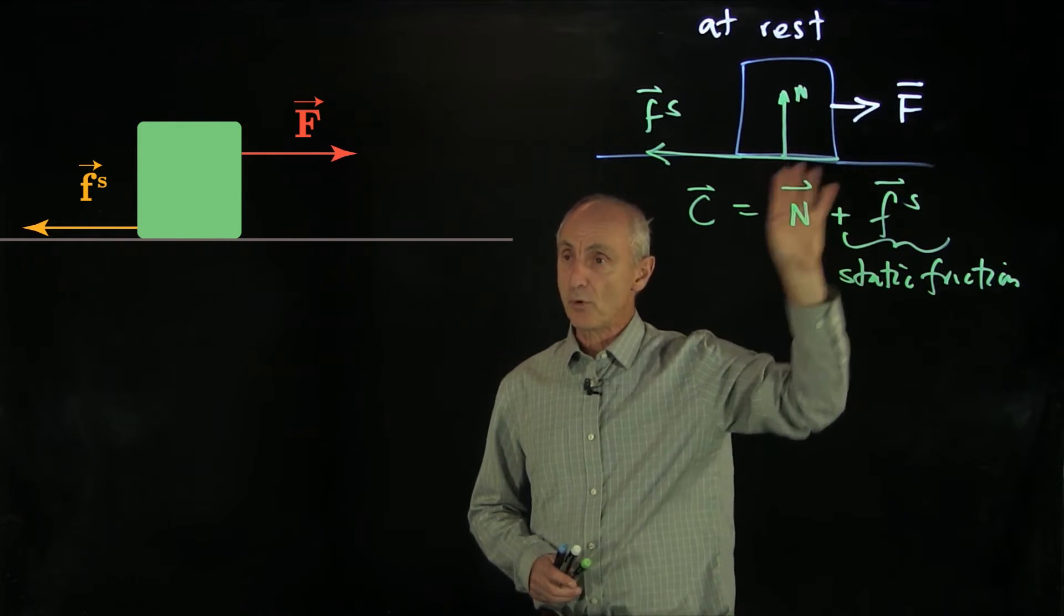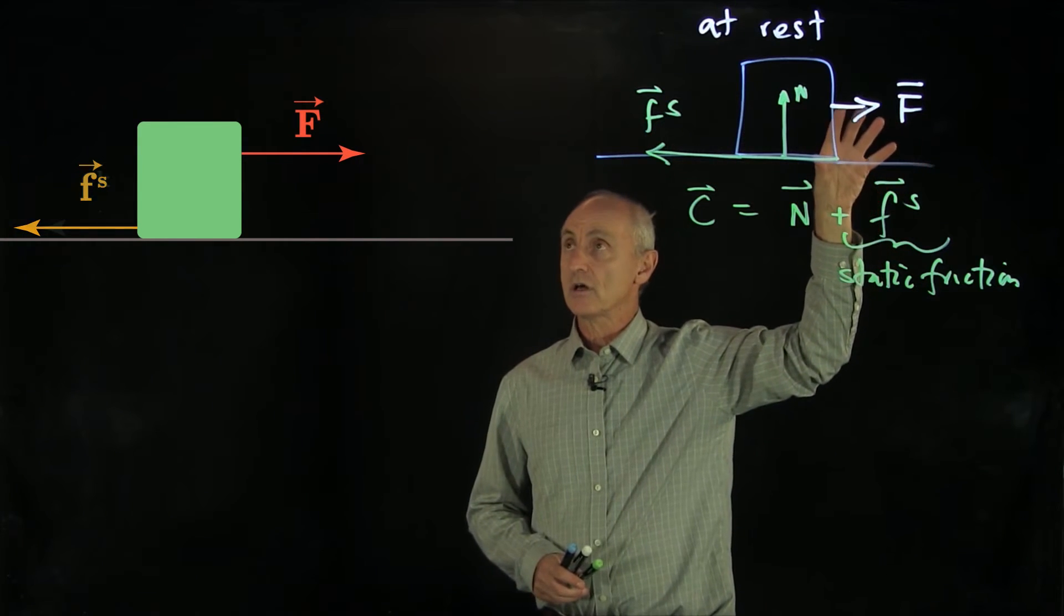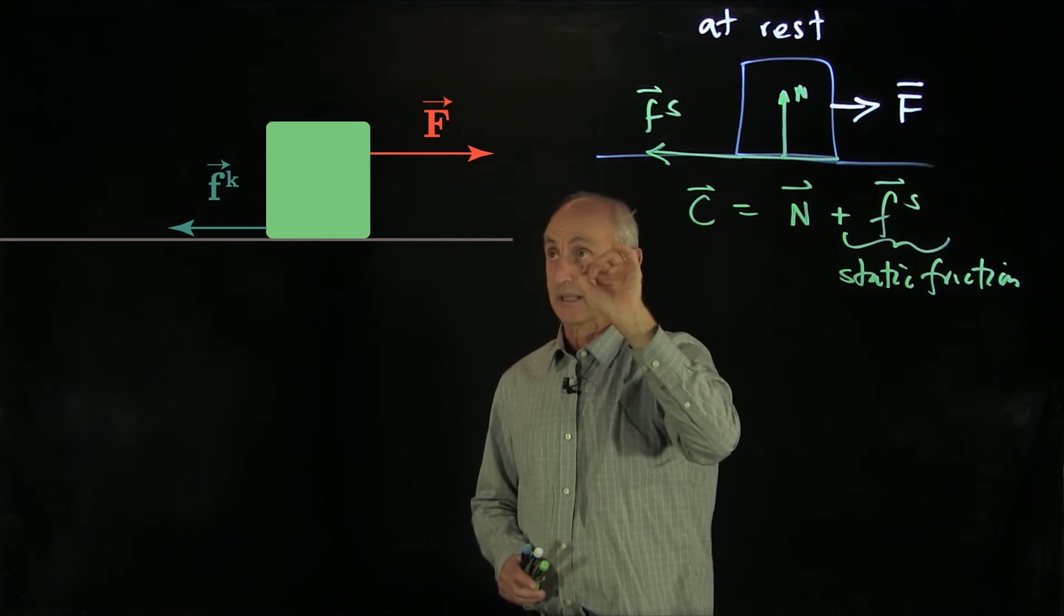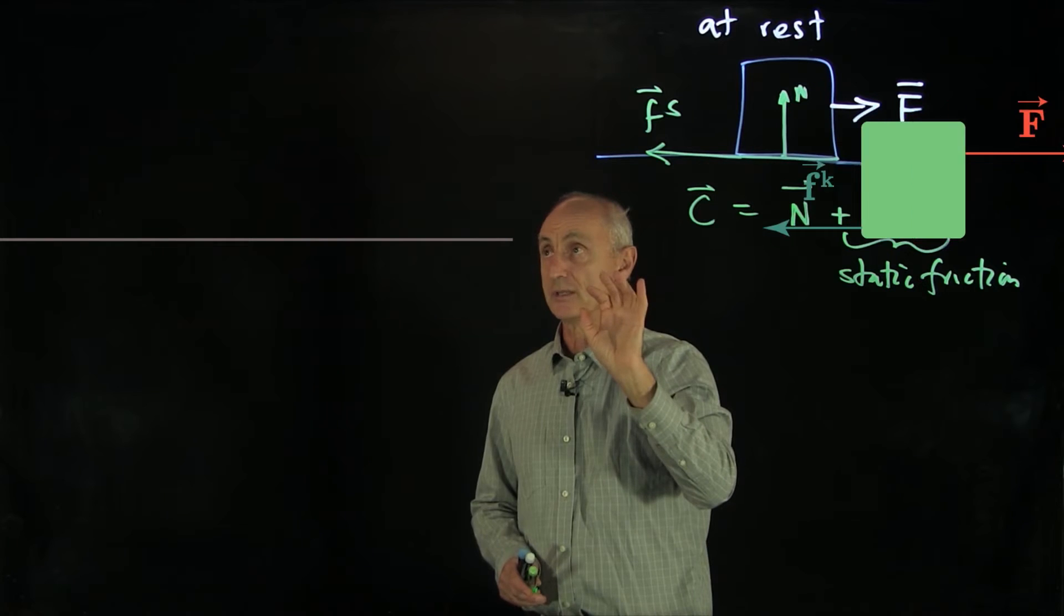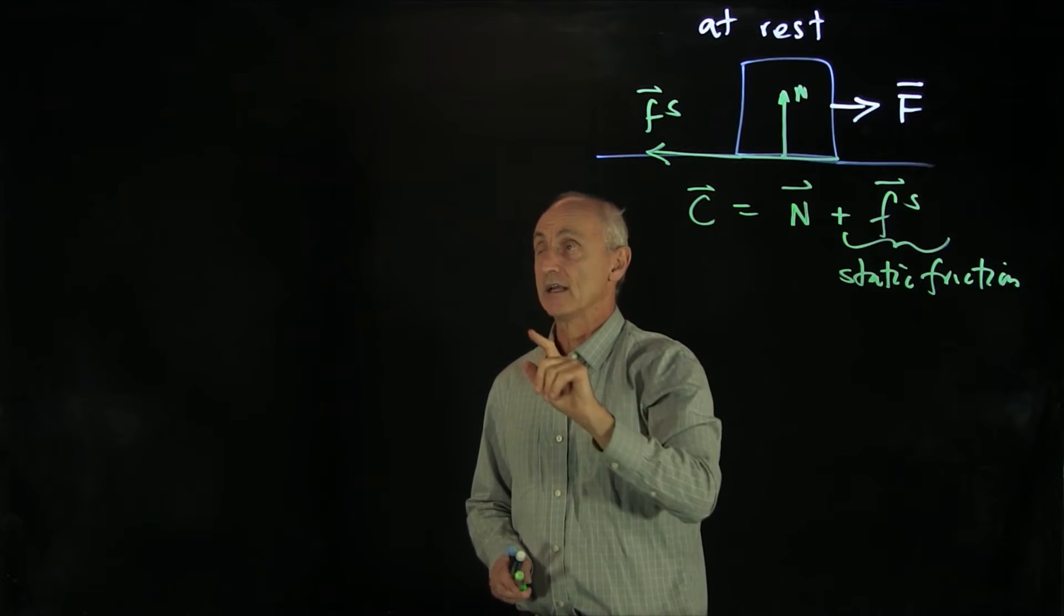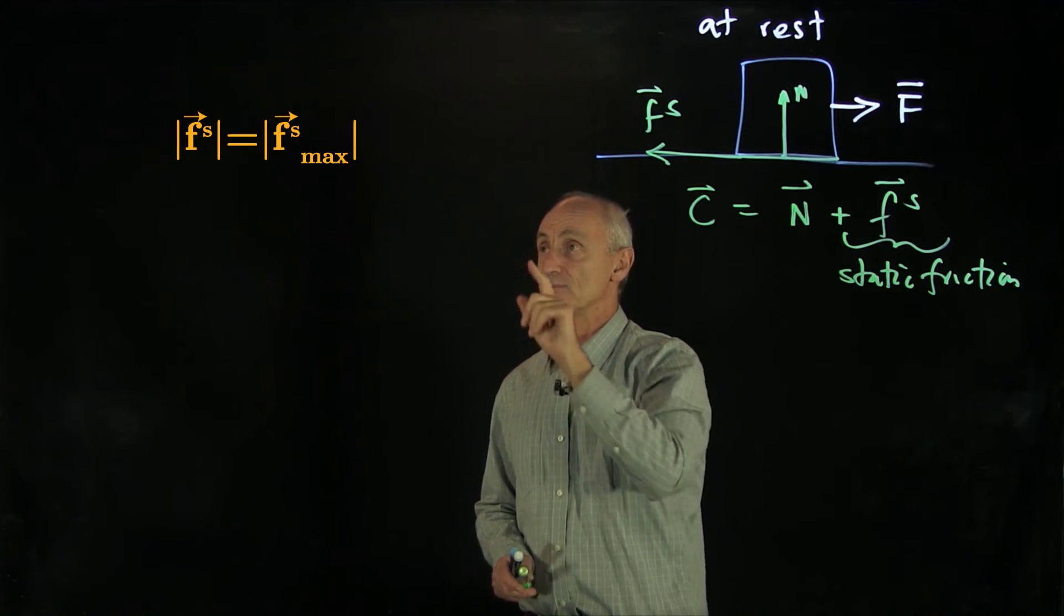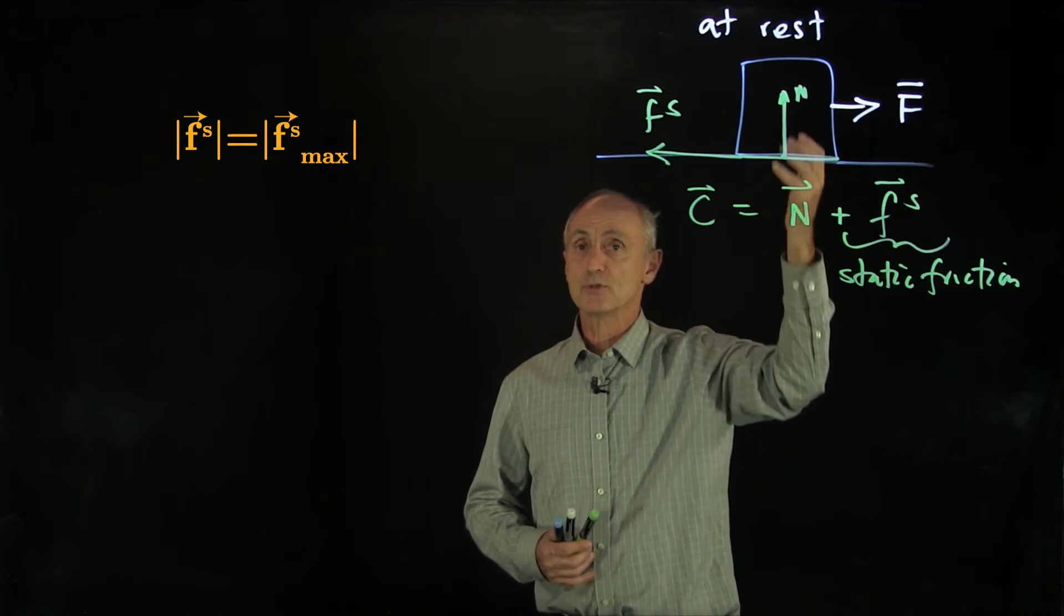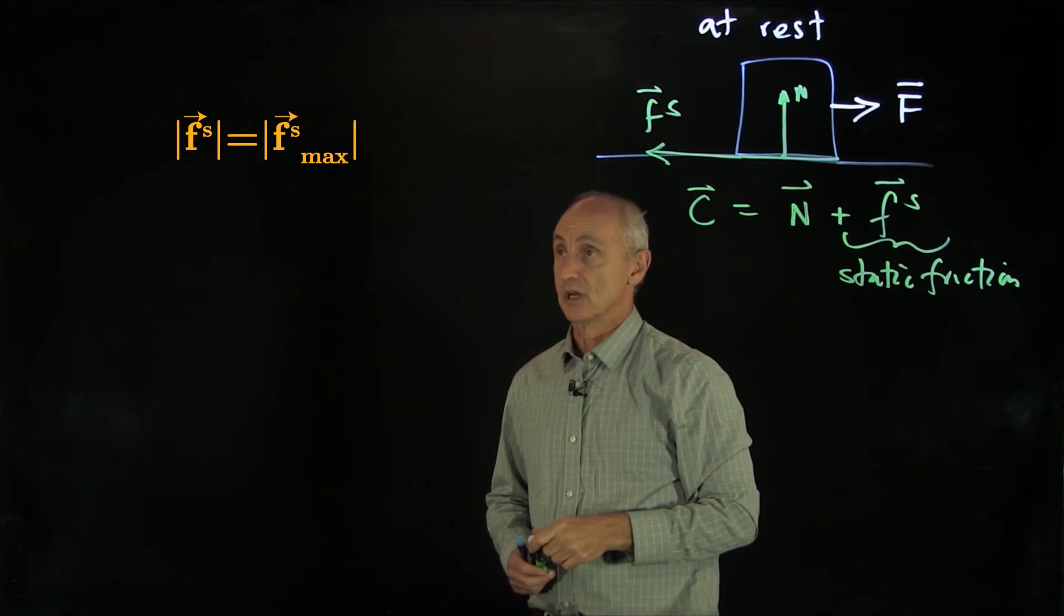But at a certain point, when we apply a large enough external force, the object suddenly starts to slip. That's what we call the just slipping condition. And the reason for that is static friction has reached its maximum possible value that has to do with the physics of the interaction between the surface and the object.